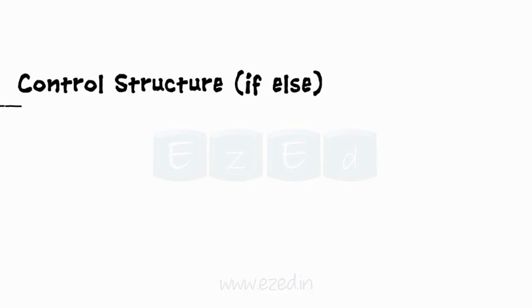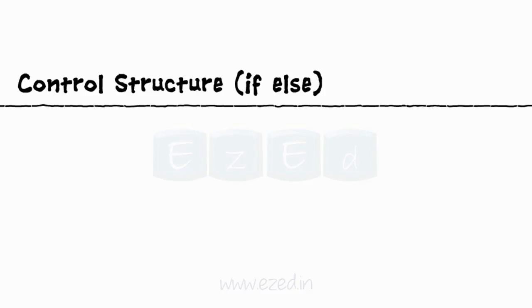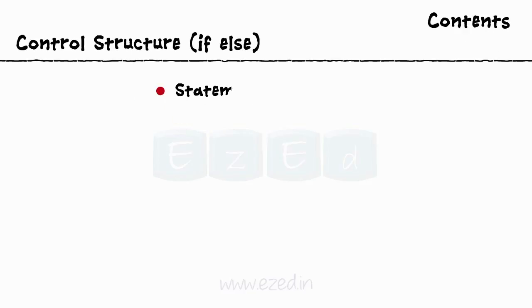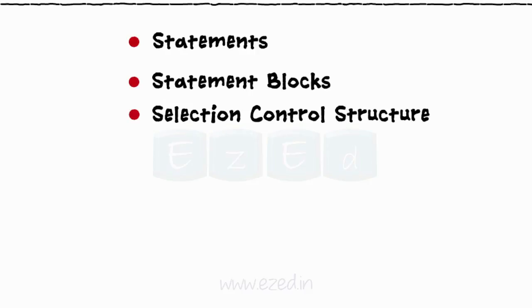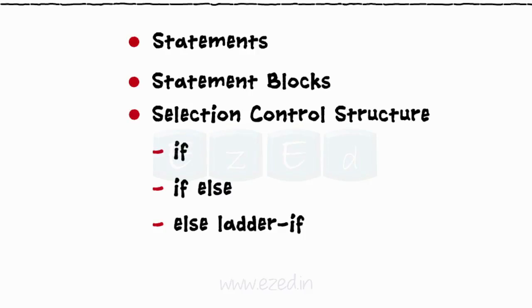In this Easy Ed video lecture, we are going to learn what are statements and statement blocks in C. We will also learn the selection type of control structure which includes if, if-else, and ladder if, as well as switch case.